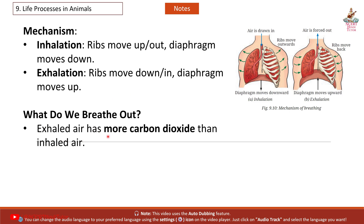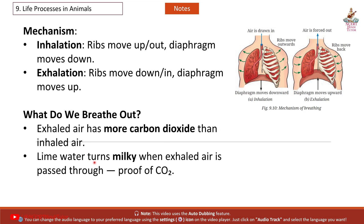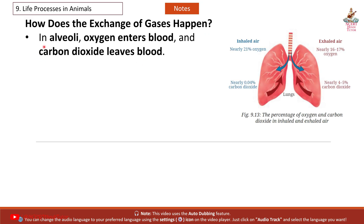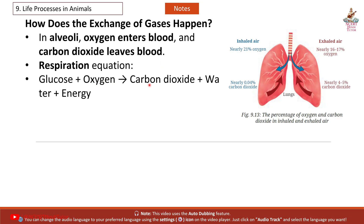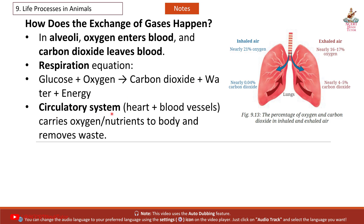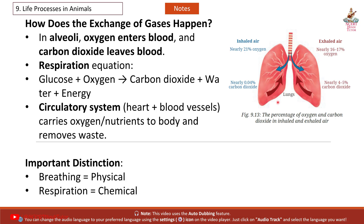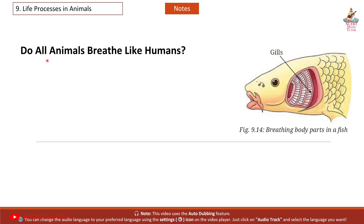Exhaled air has more carbon dioxide than inhaled air. Lime water turns milky when exhaled air is passed through it — proof of carbon dioxide. In alveoli, oxygen enters the blood and carbon dioxide leaves. Respiration equation: glucose + oxygen → carbon dioxide + water + energy. The circulatory system (heart and blood vessels) carries oxygen and nutrients to the body and removes waste. Inhaled air is nearly 21% oxygen and 0.04% carbon dioxide; exhaled air is nearly 16–17% oxygen and 4–5% carbon dioxide.